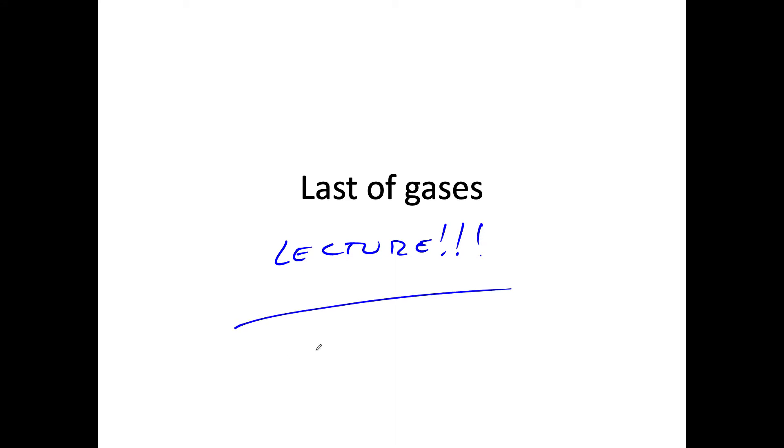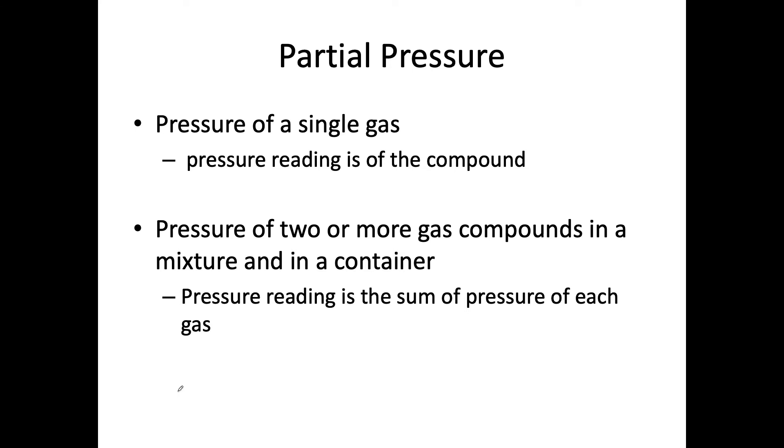Alright, so we're going to look at various different things that gases can affect and how we deal with them. First, it's going to be partial pressure. When we look at pressure of a single gas, the pressure reading is of just that compound. So if we have a container of oxygen, just oxygen, we're going to measure oxygen. If we've got two or more gas compounds in the mixture and in a container and we read the pressure, that pressure reading is the sum of the pressure of each gas.